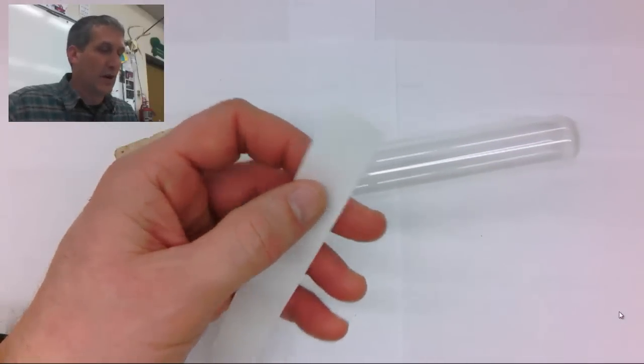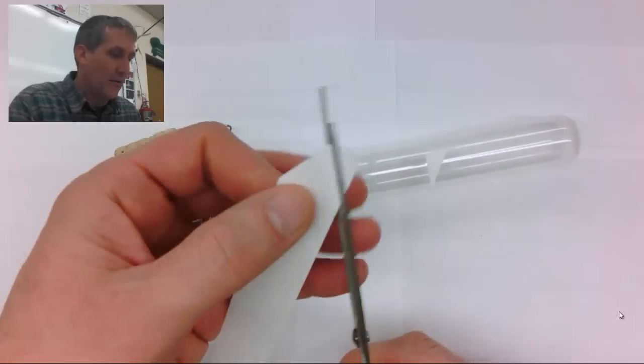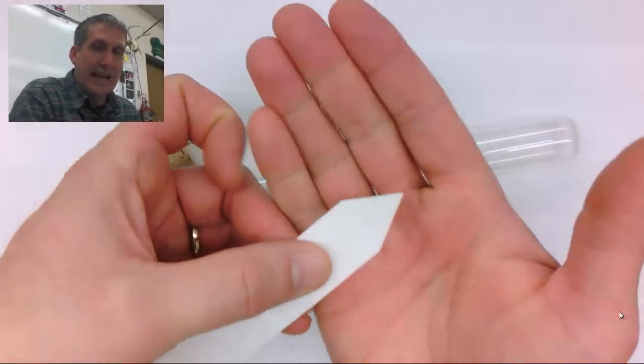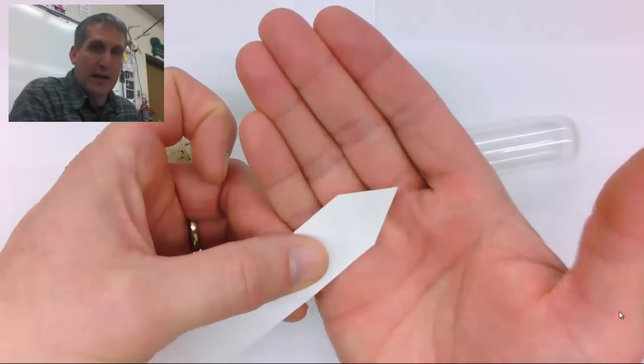The next step is to cut a point in the end of the chromatography paper. This point will extend down to the bottom and the tip will be in the chromatography solvent.